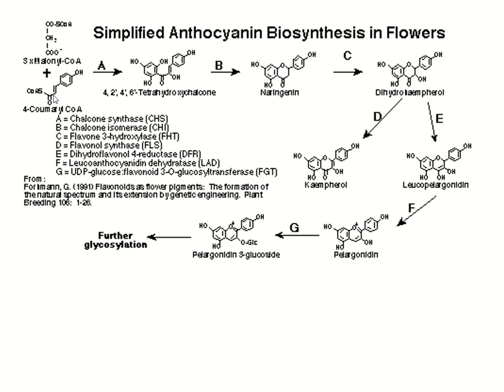You have to remember: the precursor for simplified anthocyanin biosynthesis in the flower is malonyl-CoA and 4-coumaroyl-CoA. This pathway is very important and you have to remember it thoroughly. The enzymes are labeled A through G — 8 enzymes in total — responsible for the formation and further glycosylation.